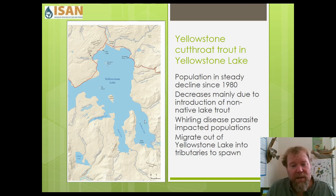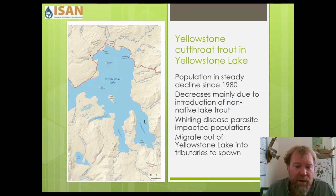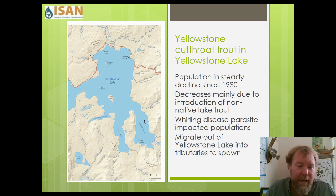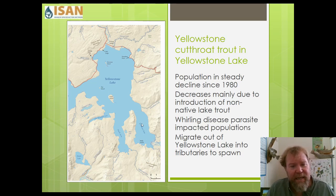Because Yellowstone cutthroat trout are a keystone species, that decline had major impacts on ospreys, eagles, and other meat-eating animals. The osprey population around Yellowstone Lake plummeted to only three or four nesting pairs, because there just weren't enough cutthroat trout for them to eat — the result of the lake trout invasion and whirling disease parasite.